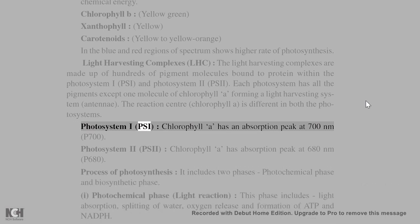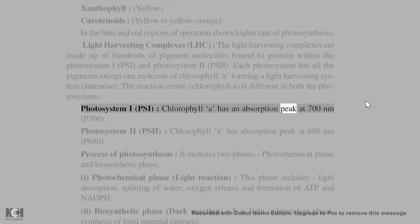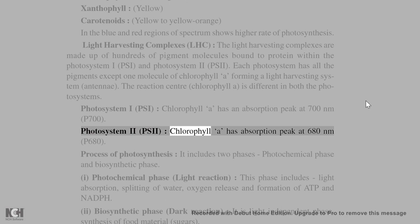Photosystem I (PSI): Chlorophyll A has an absorption peak at 700 nanometers (P700). Photosystem II (PSII): Chlorophyll A has absorption peak at 680 nanometers (P680).